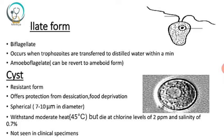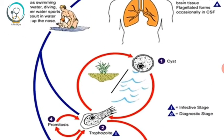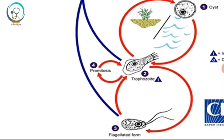The cyst stage is a resistant form that offers protection from desiccation and food deprivation. It is spherical, having a diameter of about 7 to 10 micrometers. It can withstand moderate heat up to 45 degrees Celsius, but dies at chlorine levels of 2 ppm and salinity of 0.7%. This cyst form is not seen in clinical specimens.